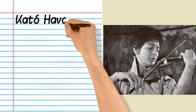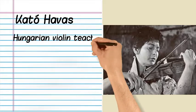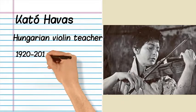Kato Havas was a Hungarian violin teacher. Her years were from 1920 to 2018.